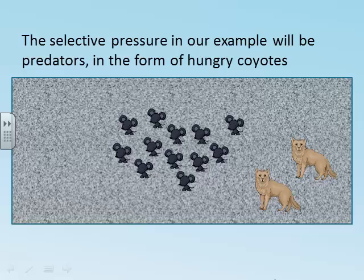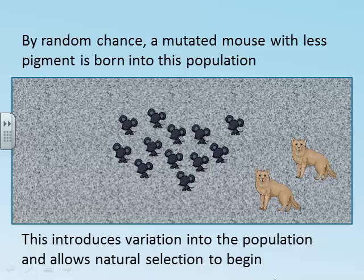The selective pressure in our example is predators, coyotes who love tasty mice. In addition to selective pressure, we need to have variation in the population. Let's imagine that a mutation results in a less pigmented mouse being born. Notice how this gray mouse blends in quite well to the gray rock.